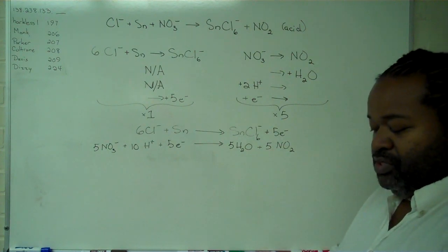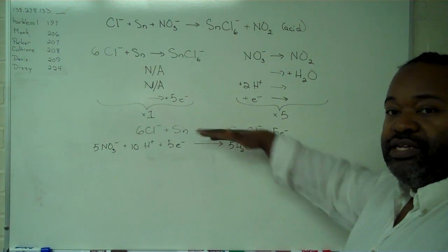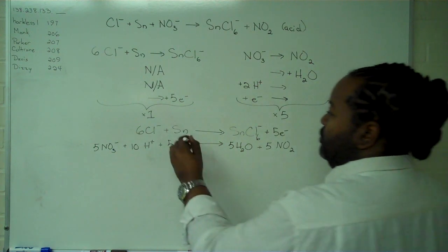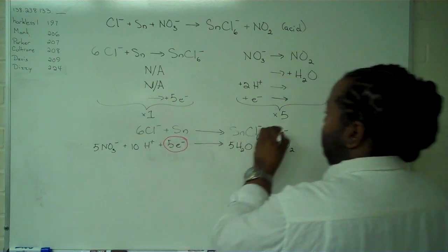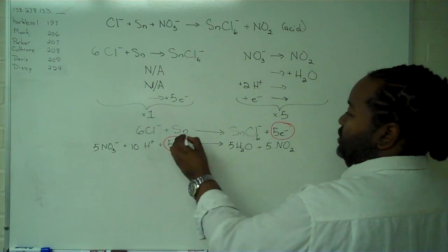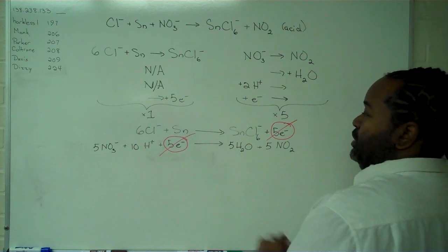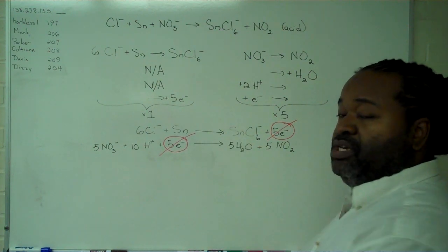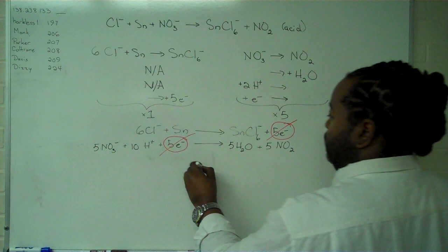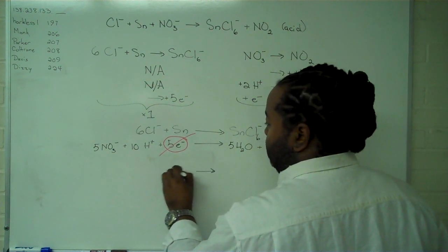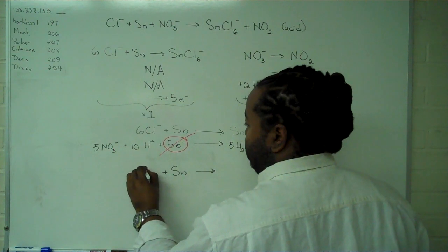So now that we've multiplied it through our half reactions, and we're prepared to put them all back together, we want to make sure that we can actually cancel our electrons out, which we can do here and here. And since nothing else cancels, we can simply write everything out all at once in one big, completely balanced redox reaction.